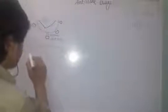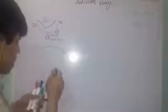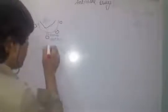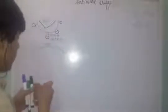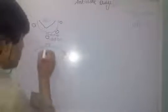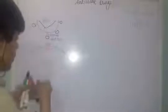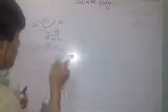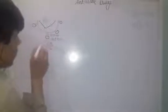Now let me draw the host cell membrane as well. This drug usually affects the T lymphocyte. So suppose this is the host cell. This is the receptor of the host cell, and we call it the CCR5 receptor. The CCR5 receptor is also called the co-receptor.